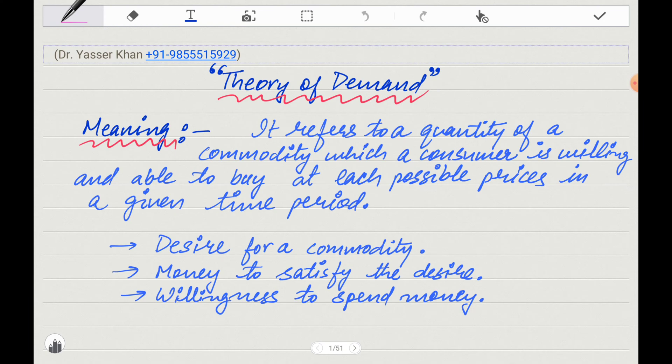This is the first part of Theory of Demand. It refers to quantity of a commodity which a consumer is willing and able to buy at each possible price at a given point of time or period of time. What is demand in simple words? It is such a quantity of any commodity which you are willing to buy and able to buy. You also have money at a given price at a given time.